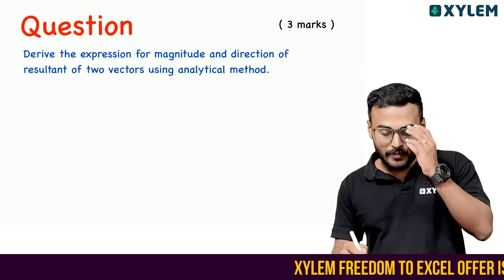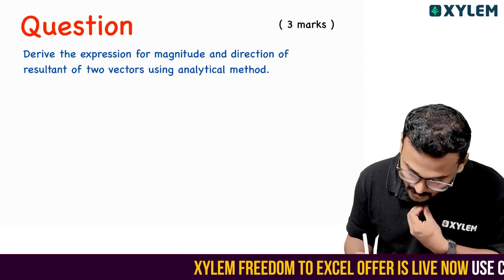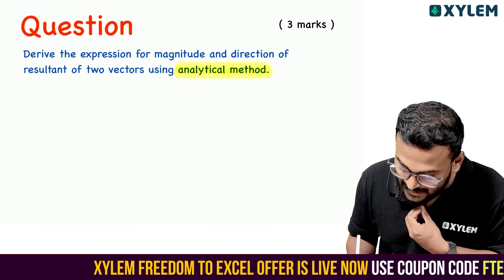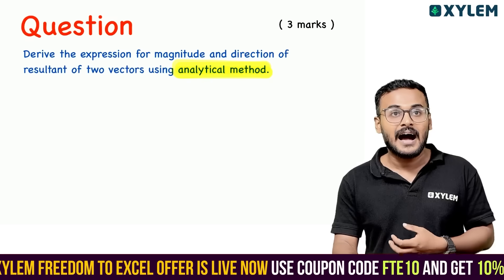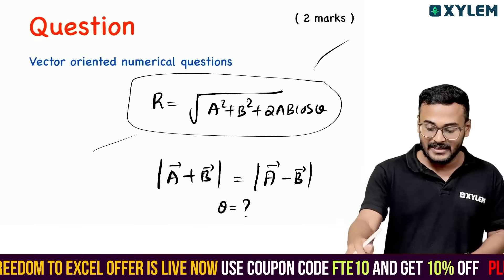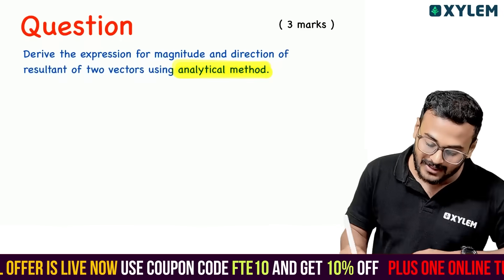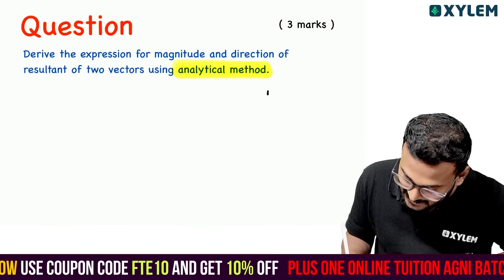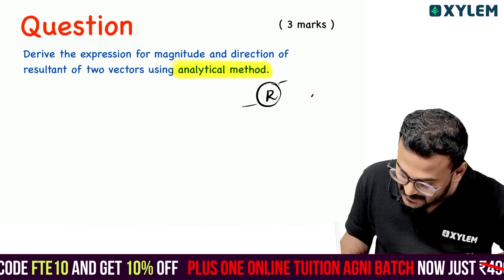Derive the expression for the magnitude and direction of the resultant vector using the analytical method — the parallelogram analytical method. R is going to be the formula for the magnitude of the resultant.